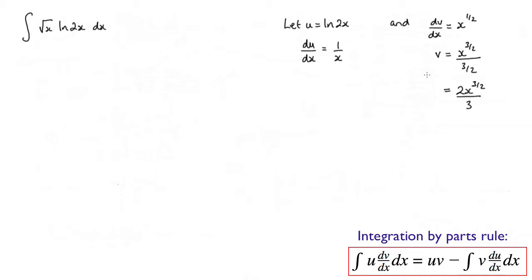Now we're going to go ahead and make those substitutions into here. So the first part of the rule is u times v. So u is log 2x and v is this. So I'll rewrite that as 2x to the 3 over 2 over 3, and that's times log 2x